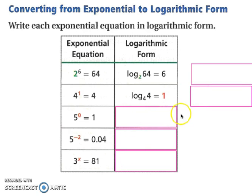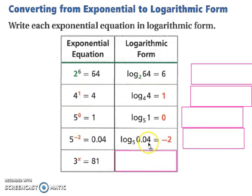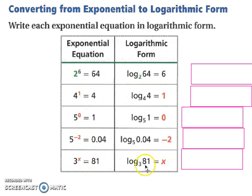Try the next three on your own. Now that you've had a chance, let's see how close you came. So 5 to the 0 equals 1 is going to be log base 5 of 1 equals 0. 5 to the negative 2 equals 0.04 is the same as log base 5 of 0.04 equals negative 2. And the last one: log base 3 of 81 equals x.